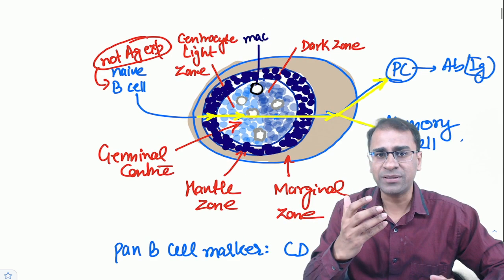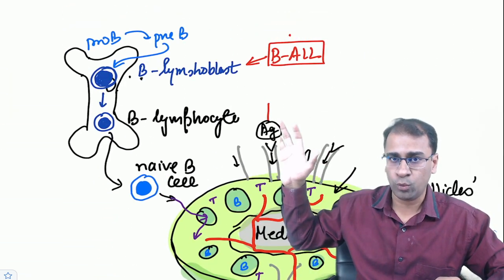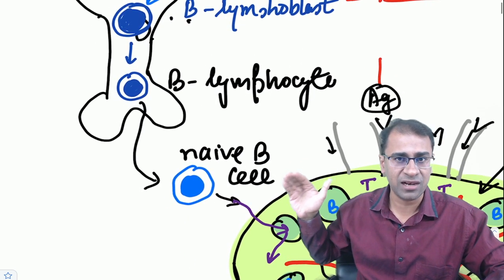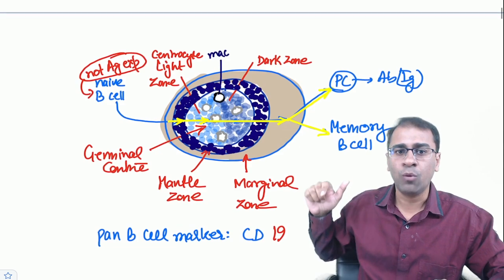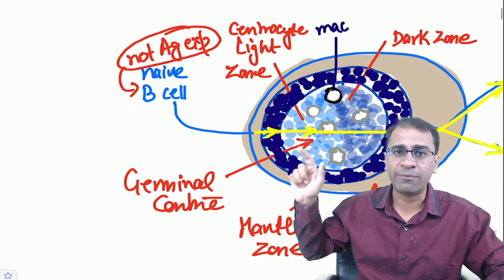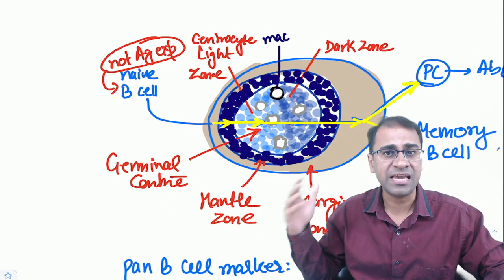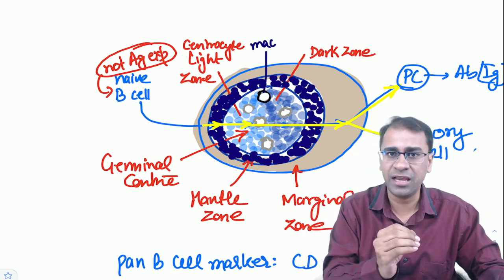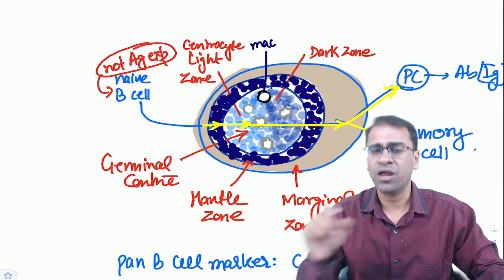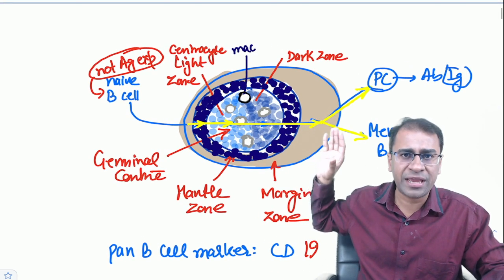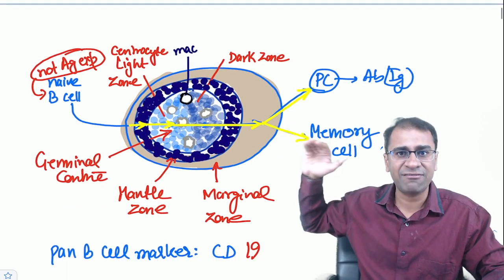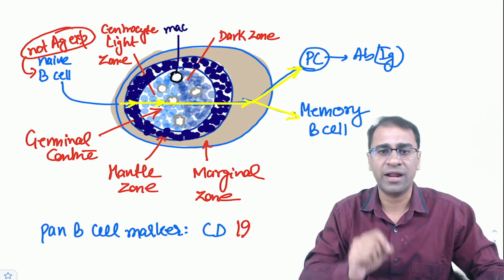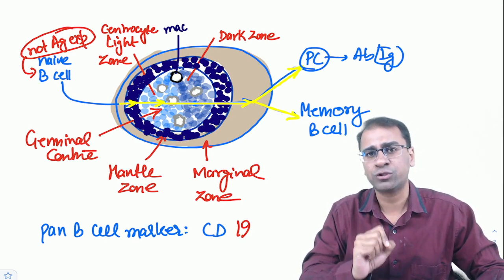Why do we need to know this? A B cell made in bone marrow comes out as a naive B cell, enters the follicle, and at various entry points mutations can cause lymphomas. The mantle zone gives mantle zone lymphoma; naive B cells can give CLL. The germinal center gives DLBCL, Burkitt lymphoma, follicular lymphoma, and Hodgkin's lymphoma. The marginal zone gives marginal zone lymphoma. Post-follicle, a B cell can become a plasma cell giving multiple myeloma, or a memory B cell giving hairy cell leukemia.